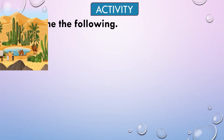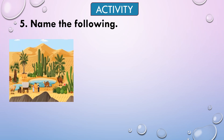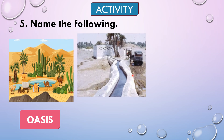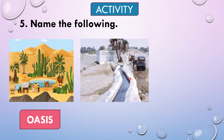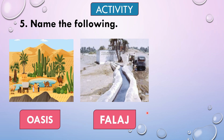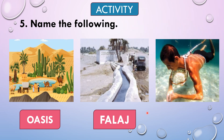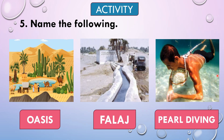Let's move on to the fifth question. Name the following — what is this? You are right, it's an oasis. What is this? It is a falaj. Falajes are water channels that are dug by hand and provide irrigation to nearby land. And what is this? It is pearl diving. You are right!